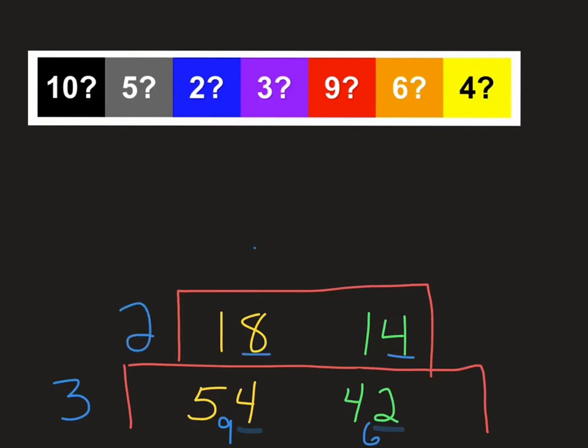So this one would be a 9. This would be a 7. Now we can't divide that anymore. The only thing that goes into 9 and 7 is 1.